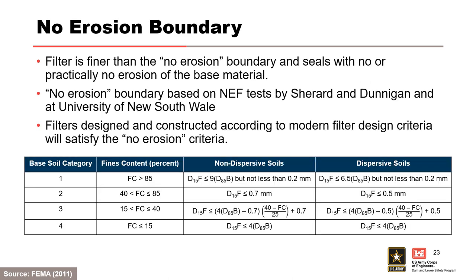For the no erosion condition, the filter is finer than the no erosion boundary and seals with no or practically no erosion of the base material. When evaluating an existing filter, start by performing an initial screening using the no erosion design criteria. Modern filter criteria used by Reclamation and USACE are adopted from FEMA 2011. The D15 of the filter is compared to the D85 of the base for various ranges of fines content represented by the base soil category.